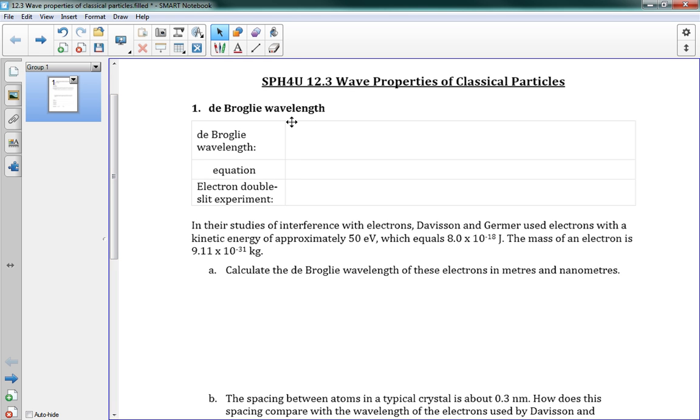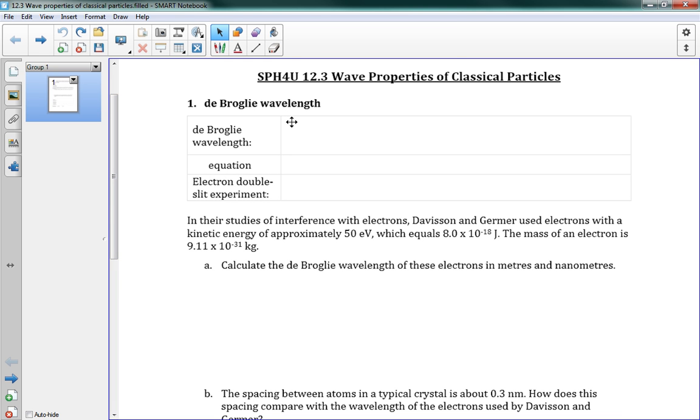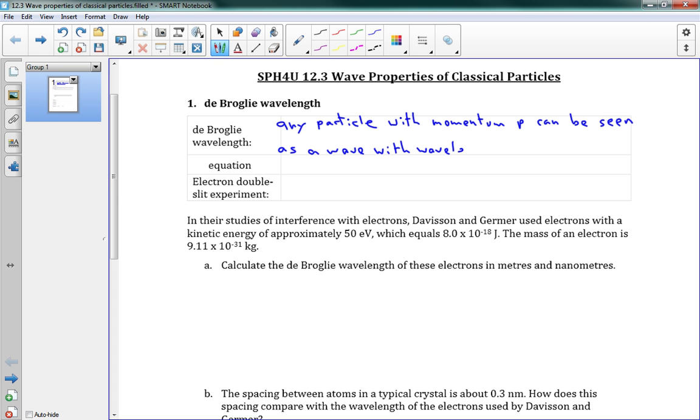Which says that any particle with momentum p can be seen as a wave with wavelength lambda. And the equation for that is lambda is equal to h over p, where h is Planck's constant again.